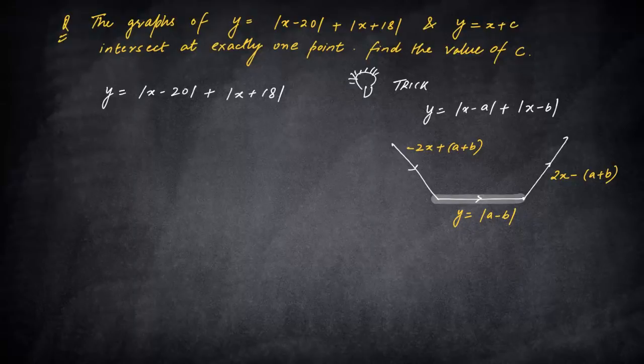So if you try and solve this particular question here, the role of a is being played by -18. You can write the same thing as |x - (-18)|. Then you have |x - 20| here. So the role of b is being played by 20. So again, coming to the graph.